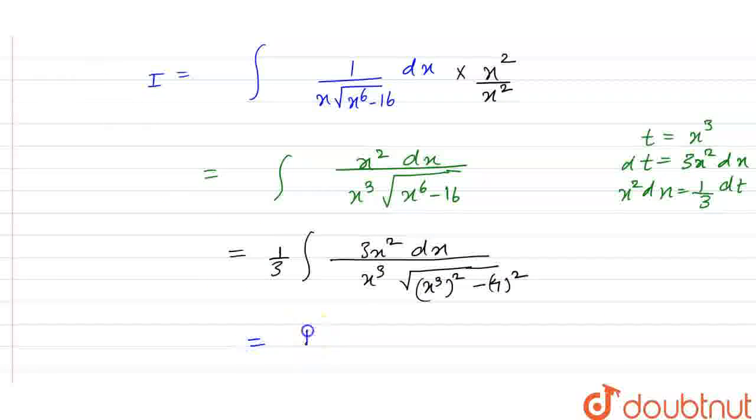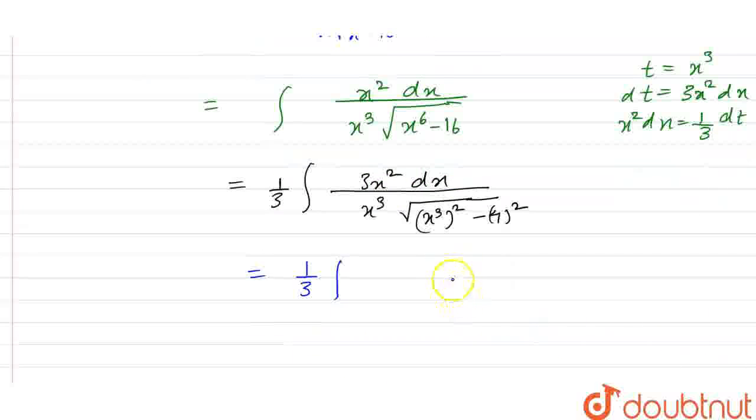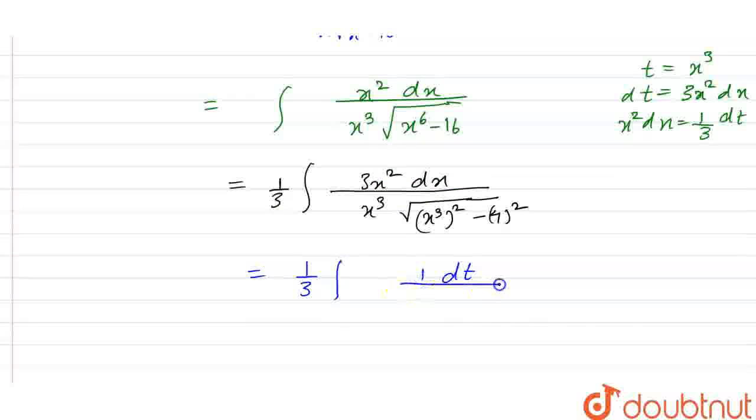We can write it as 1 by 3 times of integral. This is dt and we have 1 upon here is x cube will be nothing but we have x cube as t. We have t into under root of t square minus 4 square.